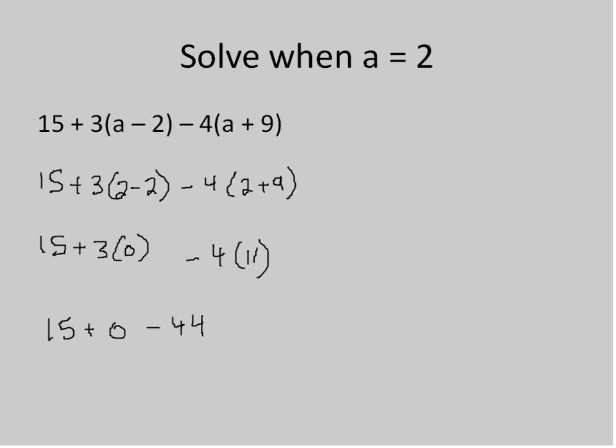So now I will add and subtract in one step from left to right. 15 plus 0 is the first one I come to. 15 plus 0 is 15. And then I'm going to finish off by subtracting 15 minus 44 to get my final answer of negative 29.